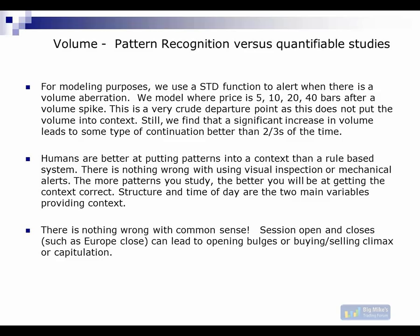This is something I did on CQG and TradeStation using a standard deviation function to filter so I can see the two or three high-volume spikes of the day. I modeled out what happens five bars, ten bars, twenty bars, forty bars out. About three-quarters of the time there is an expectation of continuation in the direction of the price. However, when you do have a volume climax, a volume spike, you often get a very sharp snapback in the opposite direction. So the losses could be quite large — you can't just trade on this alone.